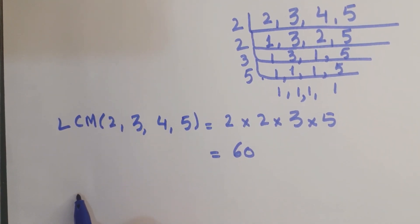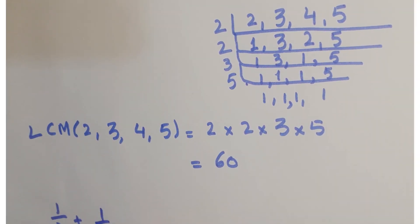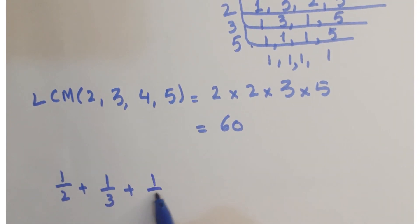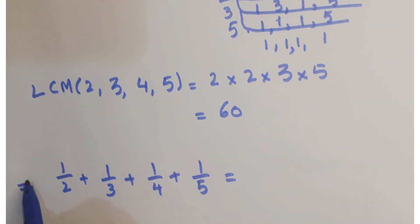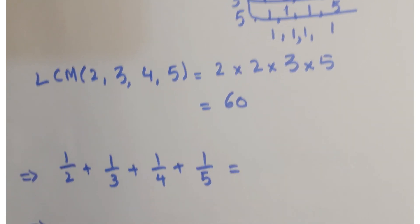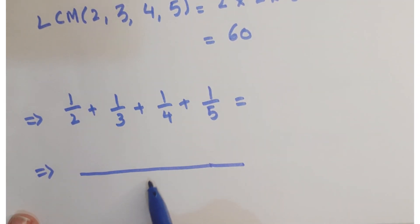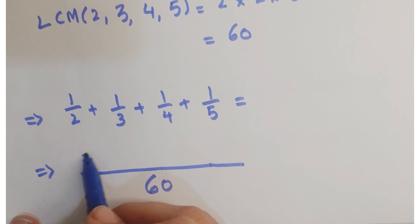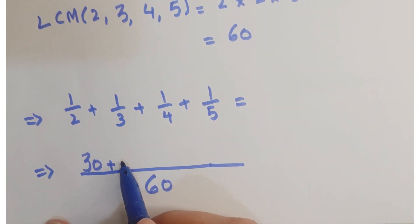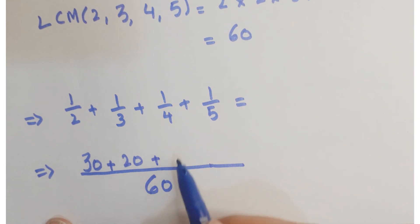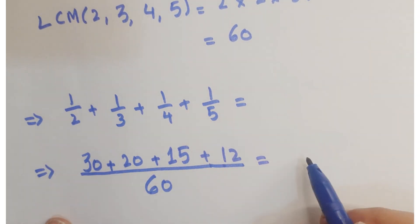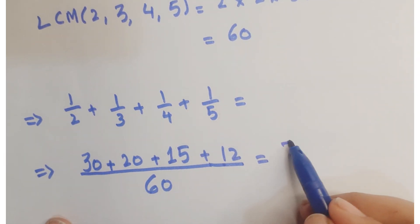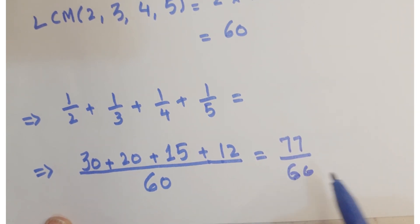Now we are going to add them up: 1/2 + 1/3 + 1/4 + 1/5. With LCM 60, we get 30 + 20 + 15 + 12 equals 77. So just by adding them up you get 77 upon 60.